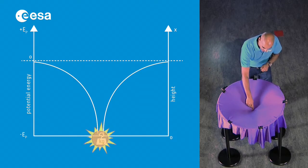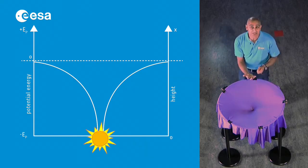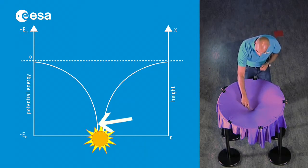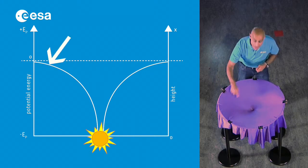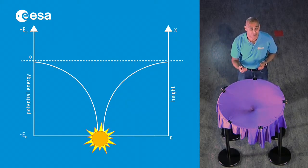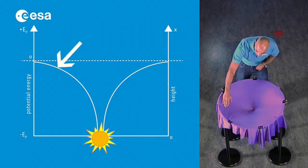In this model, the Sun is located here. And what we can see is that the further you get away from the Sun, the higher the potential energy. That's what we mean by the surface going upwards.